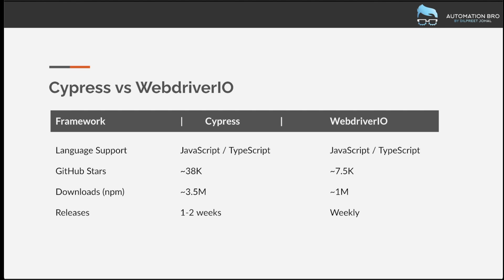The next thing we're going to look at is releases. Both Cypress and WebDriver.io are actively maintained, with almost weekly and bi-weekly releases, which is a really good thing because you want to be using a project that is actively maintained.